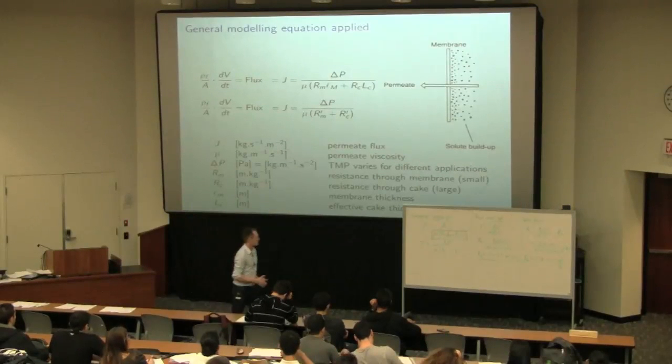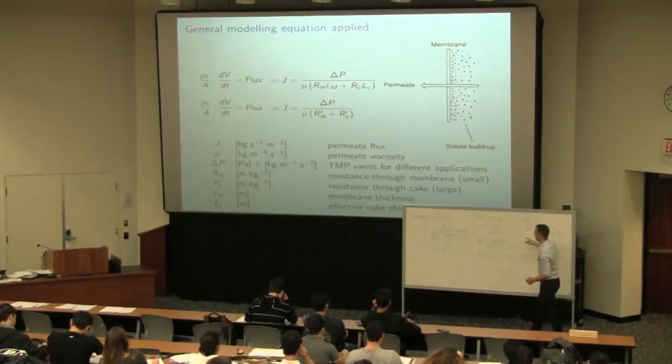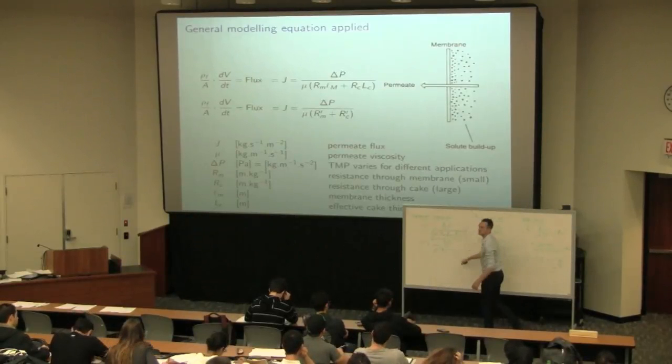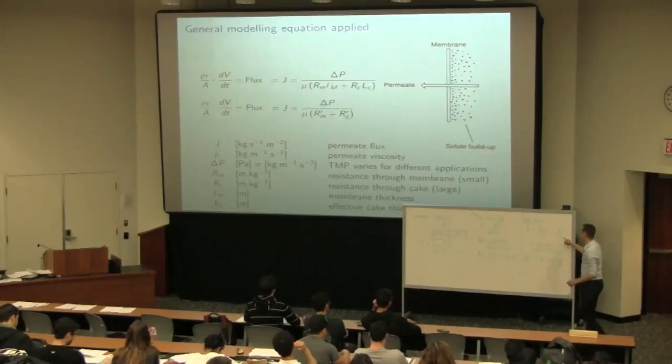We have then the second resistance, the solid building up on the membrane. So if we take our general equation, which I've simplified here with RM dash and RC dash, rearrange this now. We know all the terms in there except for the cake resistance, RC dash. Solve for that.